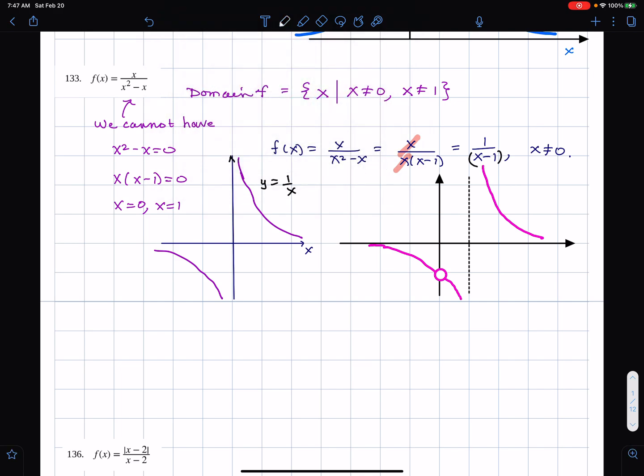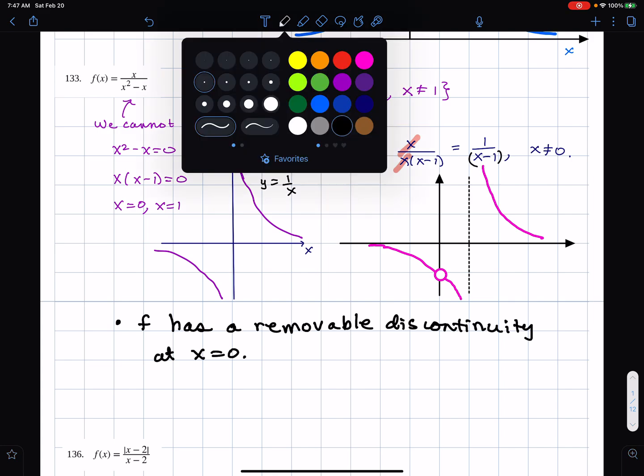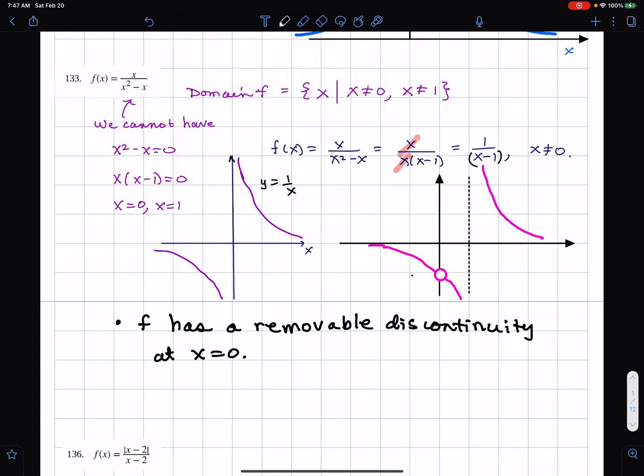What I have is that the answer is that f has a removable discontinuity at x equals zero. That means that the limit exists. You can see that the limit of f at zero is negative one, but the value of the function either is undefined or does not equal the limit.